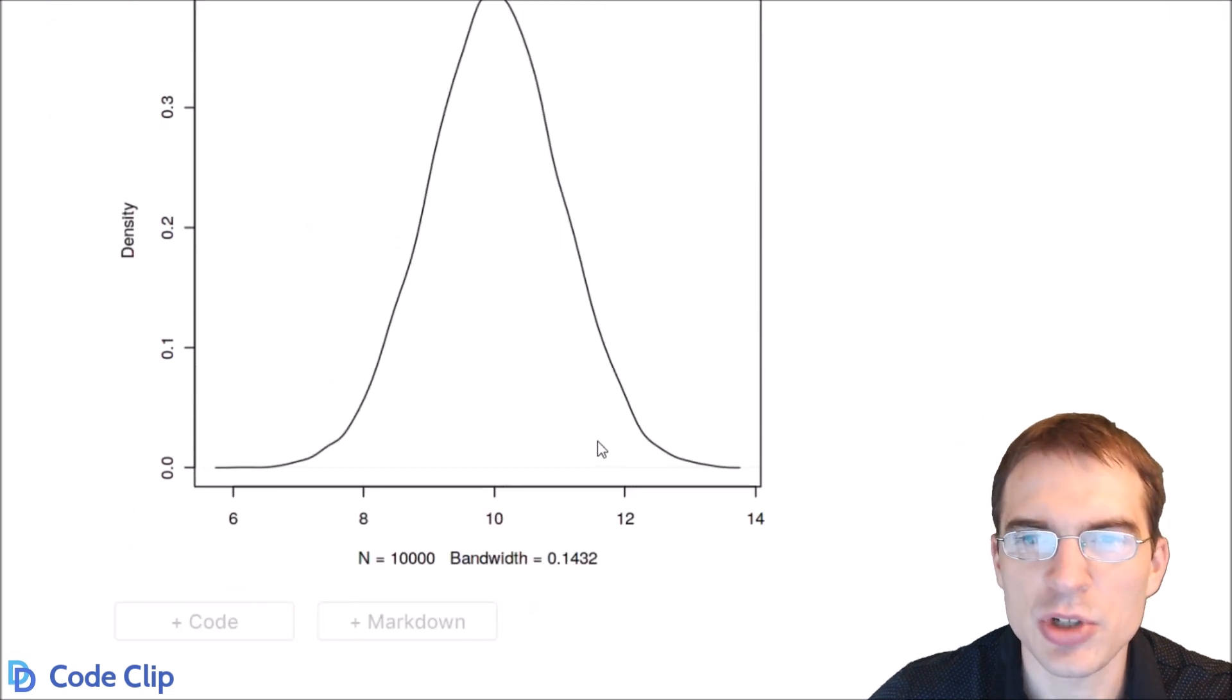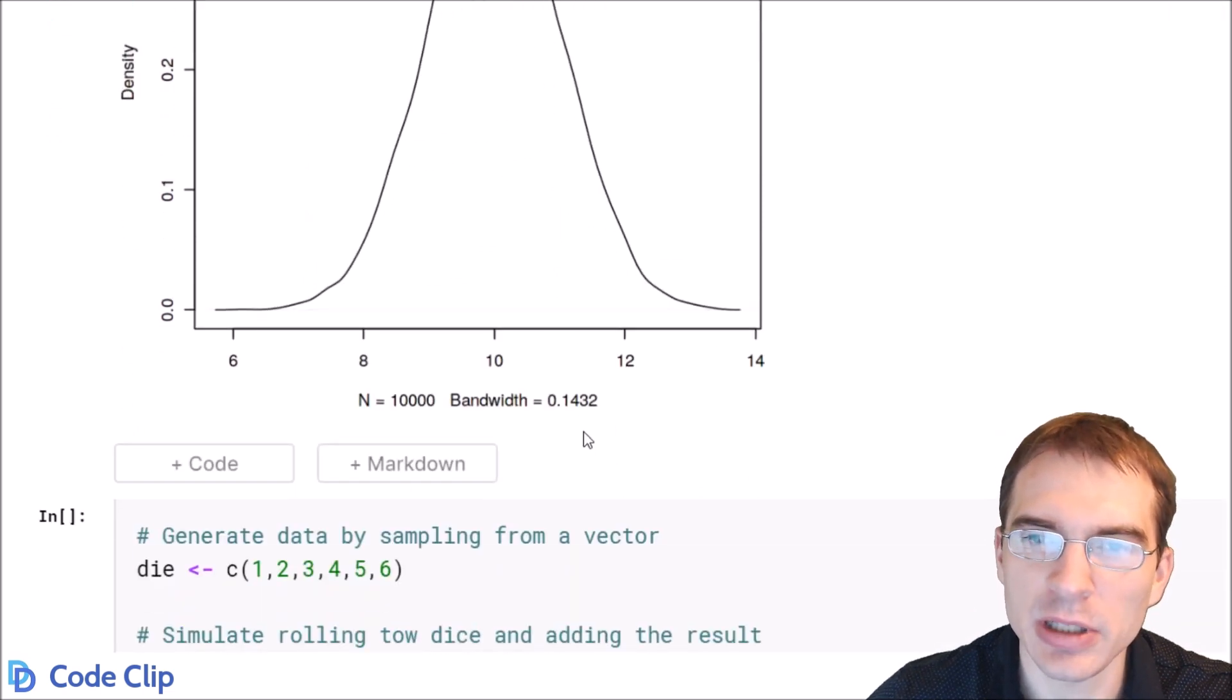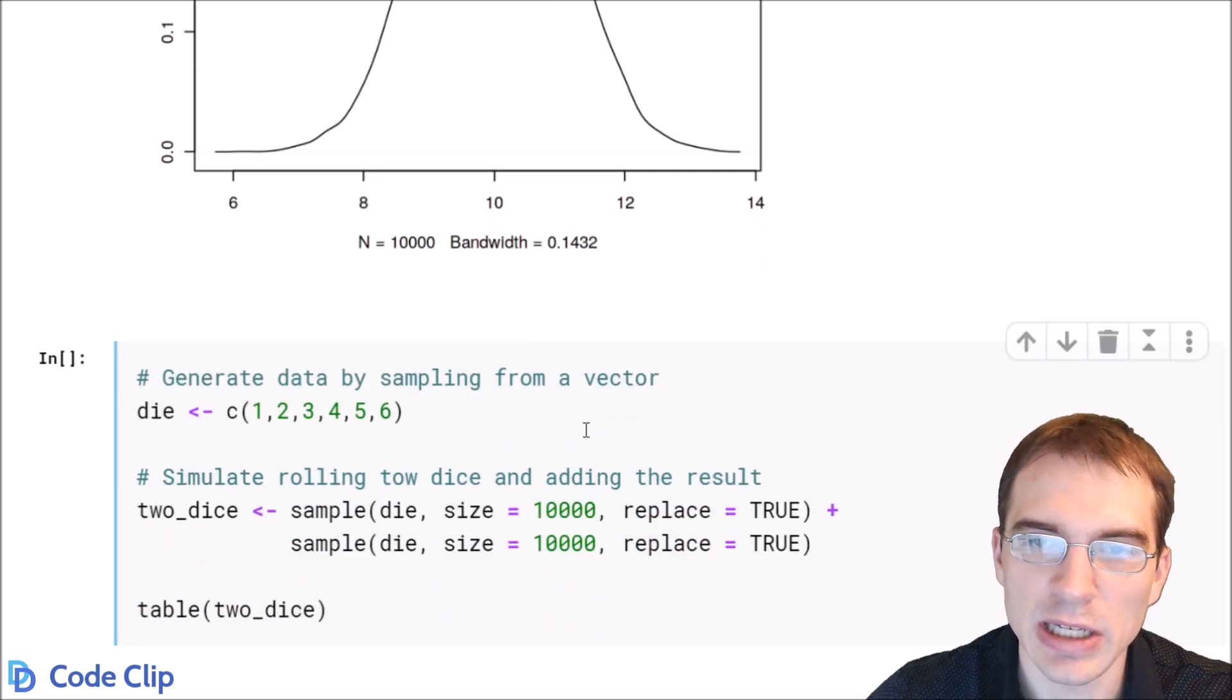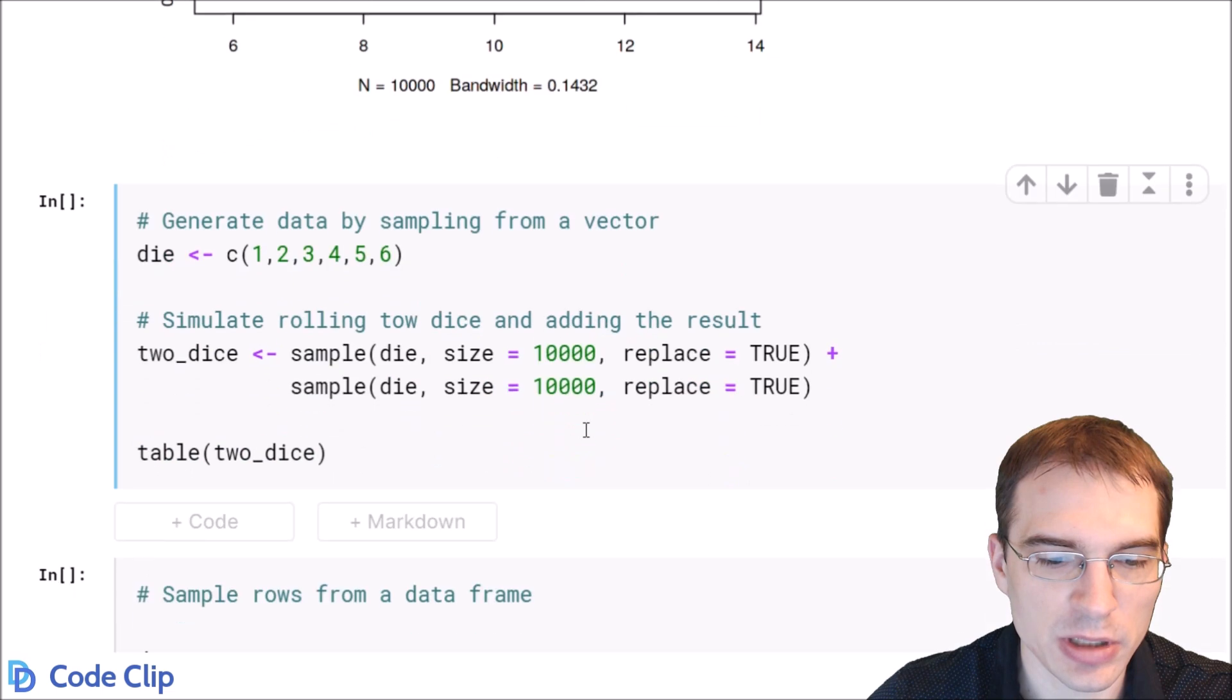And you can also generate random numbers by sampling from numbers you already have in hand either in a vector or in a data set. So we're just going to show how to do that as well.